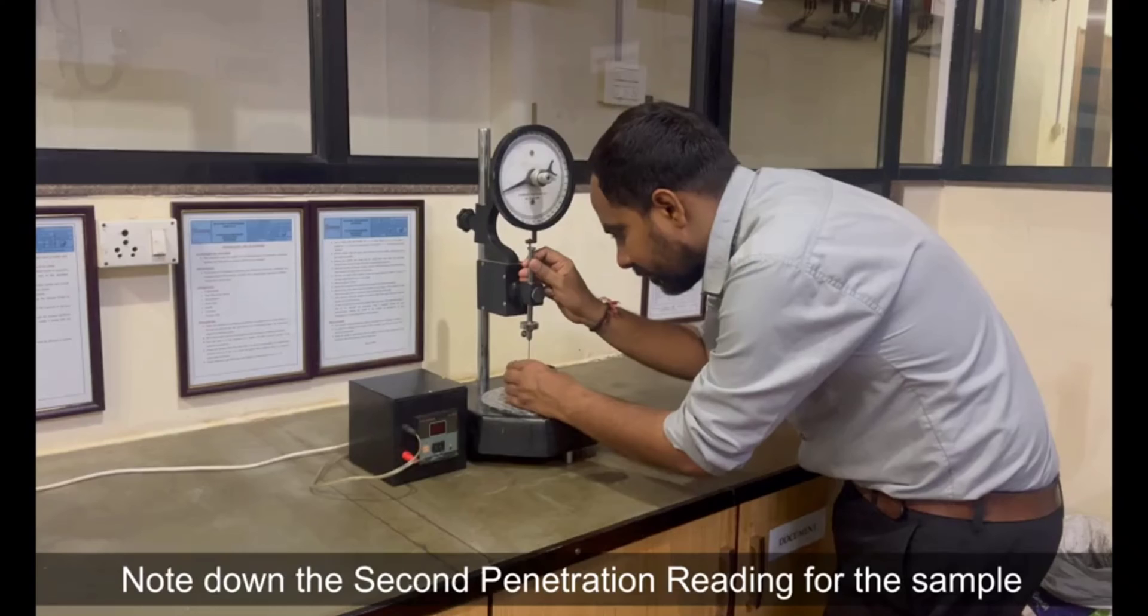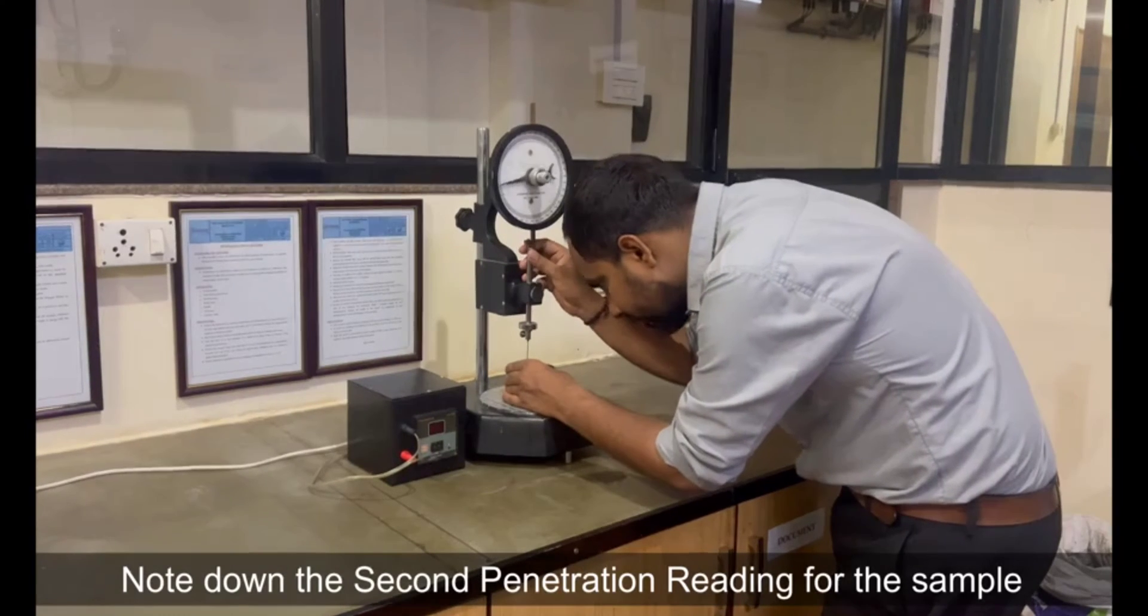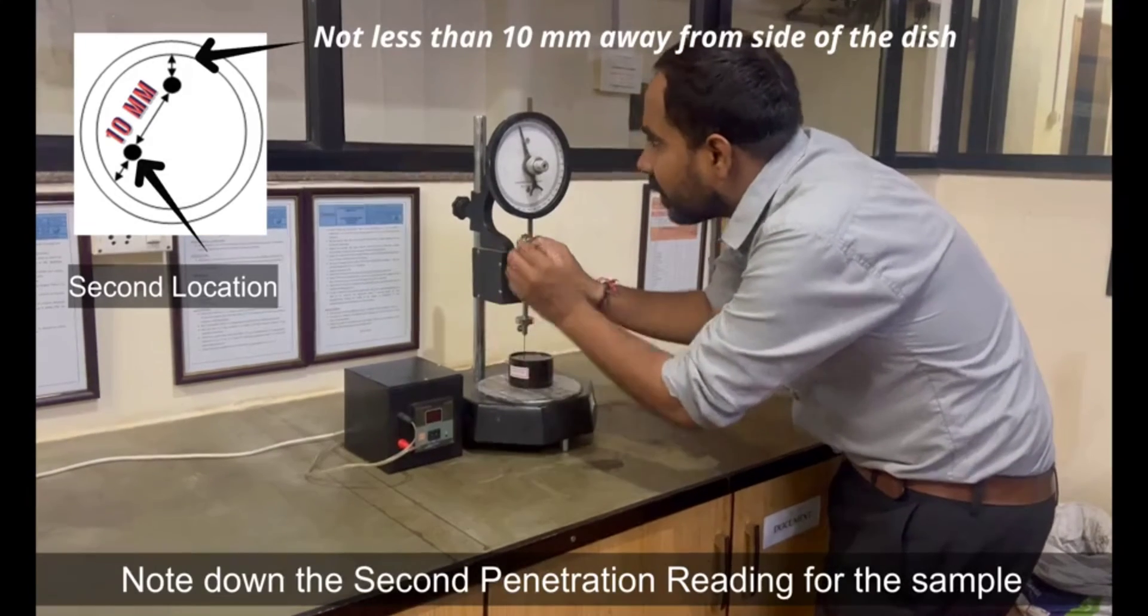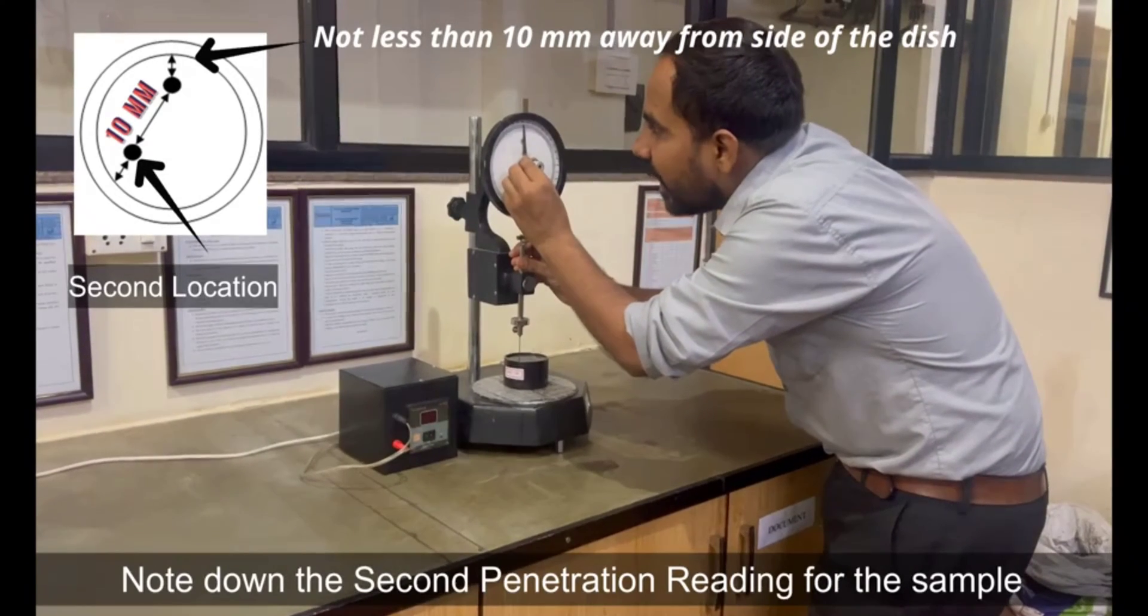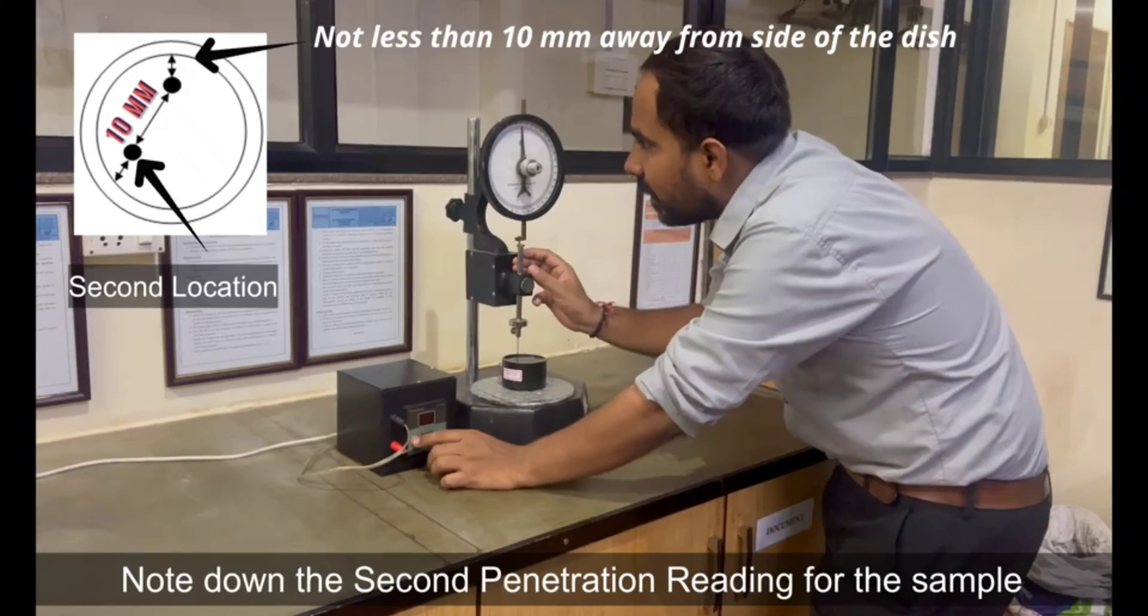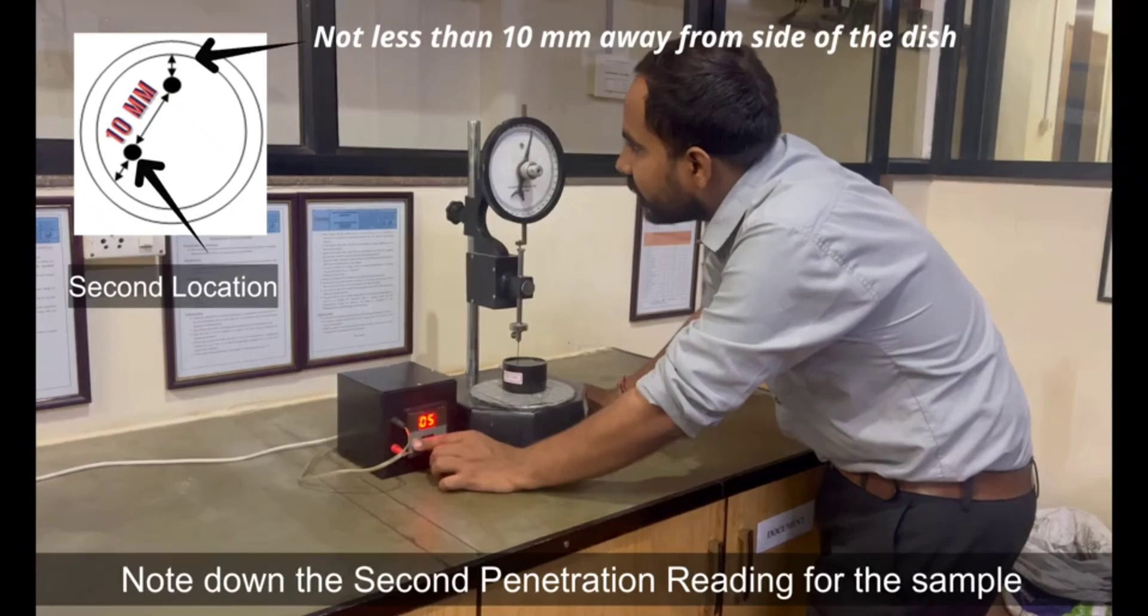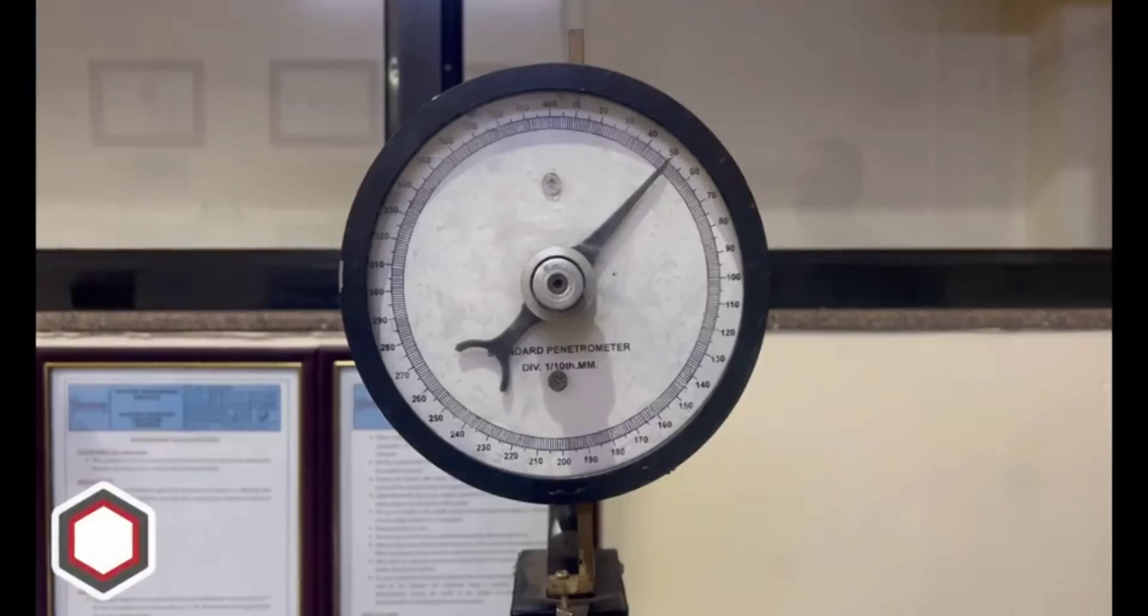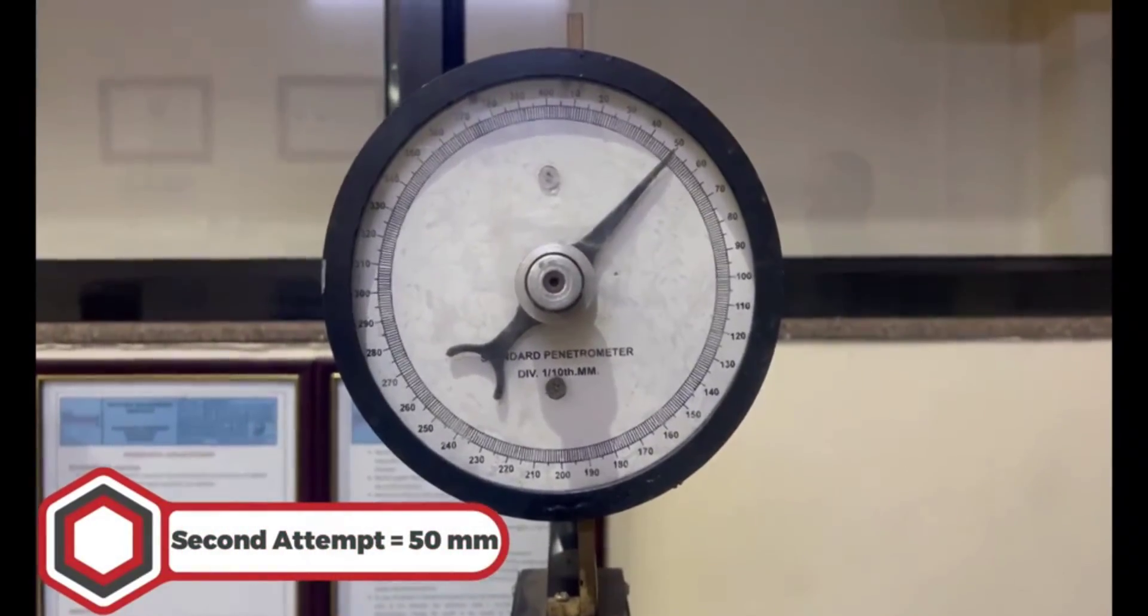Note down the second penetration reading for the sample. Set the dial gauge. Second location not less than 10 mm away from the side of the dish and first location of penetration. Release the needle for 5 seconds. Second attempt is 50 mm.